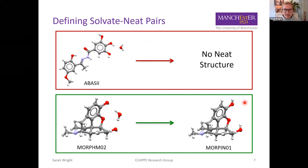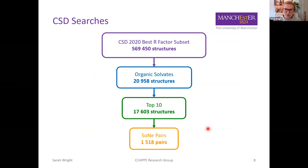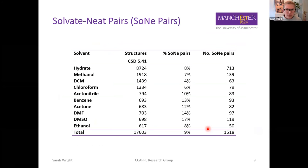Using the CSD Python API, we searched for the main component of the solvate to find neat structures with that component. For some molecules we were unable to find a neat structure, so they don't have a solvate-neat pair. For the morphine monohydrate example, we found a neat structure of morphine, so it has a solvate-neat pair — which I'll refer to as a 'solvate-neat pair' going forward. Of our structures from the most common solvates, 1518 have a solvate-neat pair, and on average 9% of solvates form a neat form.